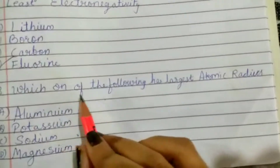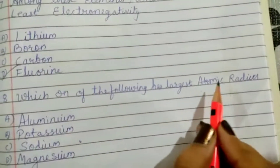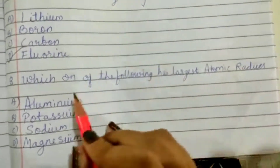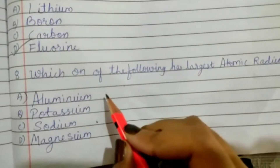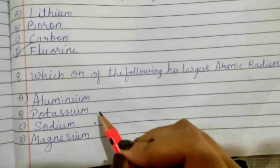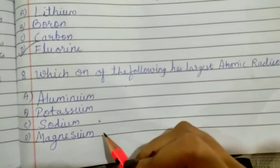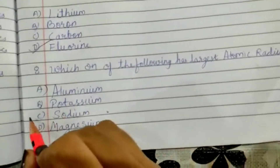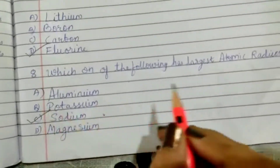Which one of the following has the largest atomic radius — aluminium, potassium, sodium, or magnesium? The correct answer is option C: sodium.